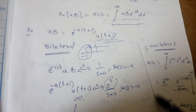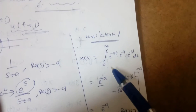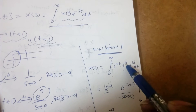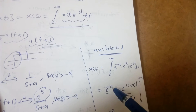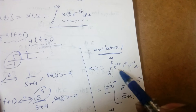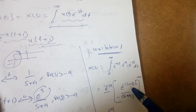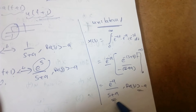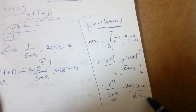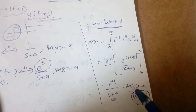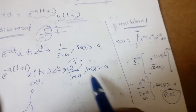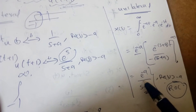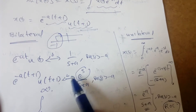But if I take the unilateral transform, it will start from 0 to infinity and we have to integrate e power minus a(t) into e power minus a into e power minus st. Taking e power minus a common and integrating e power minus(a+s)t, we get e power minus a by (s+a), with ROC real of s greater than minus a. So for bilateral we get e power s by (s+a), but for unilateral we get e power minus a by (s+a) — there is a clear difference.